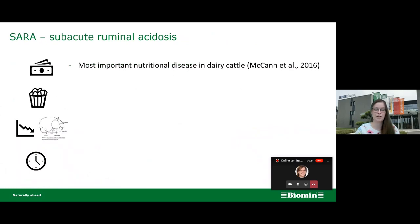Subacute ruminal acidosis has been identified as the most important nutritional disease in dairy cattle. This is due to several effects: a decrease in dry matter intake, a decrease in individual milk yield, and therefore a decrease in productivity. At the same time, there is an increase in culling rates and also in deaths and losses, giving subacute ruminal acidosis a large impact on dairy farm productivity.